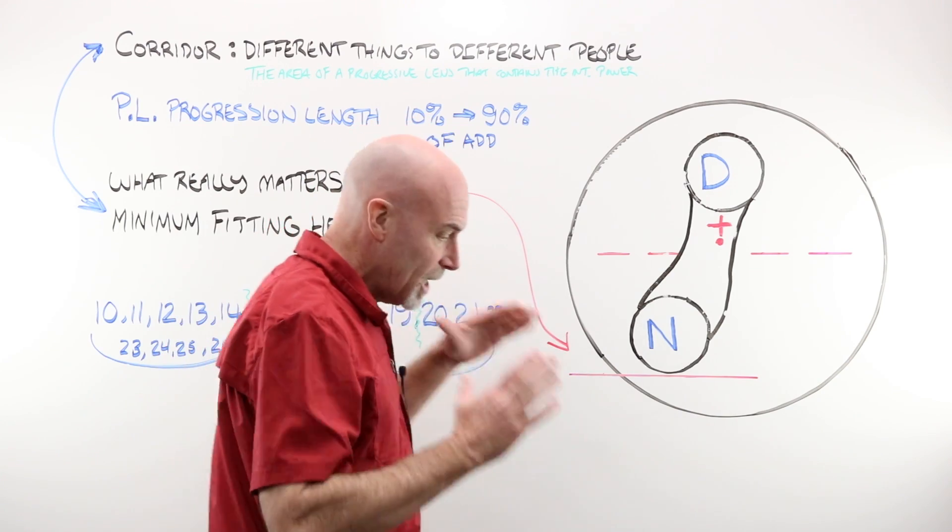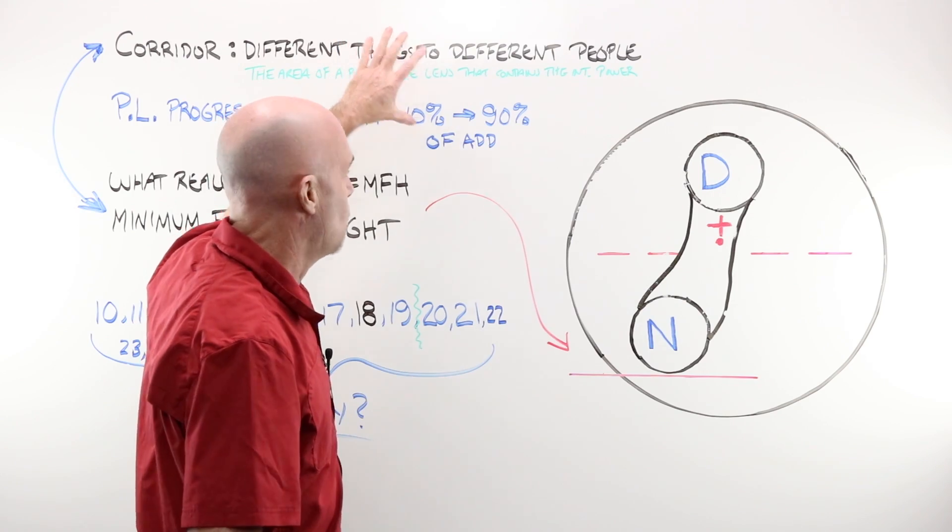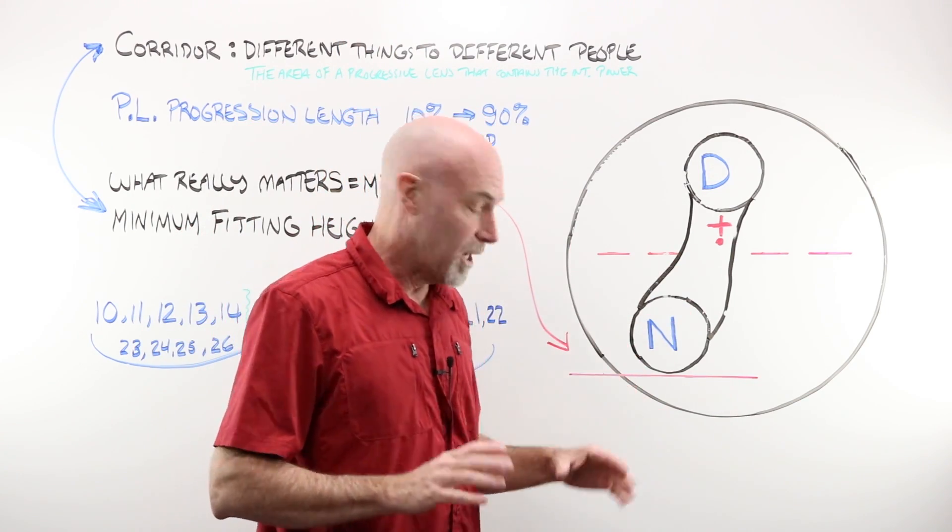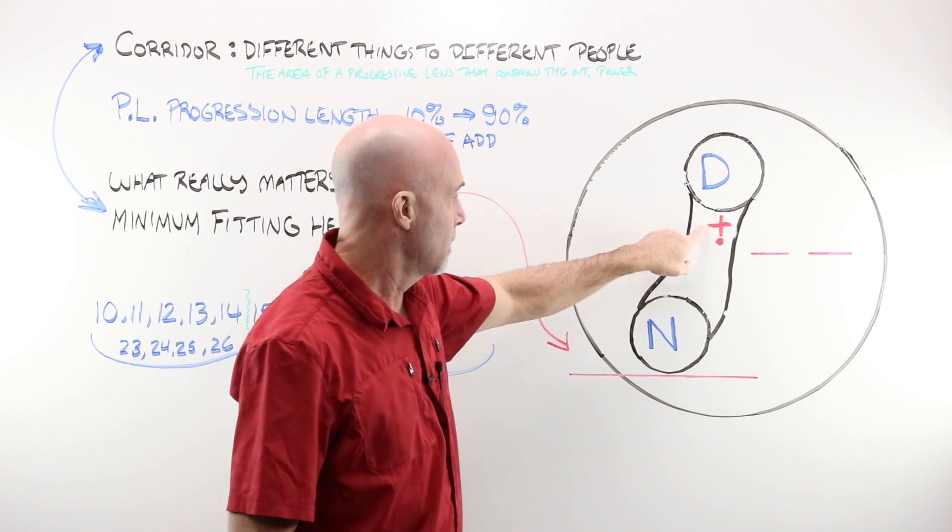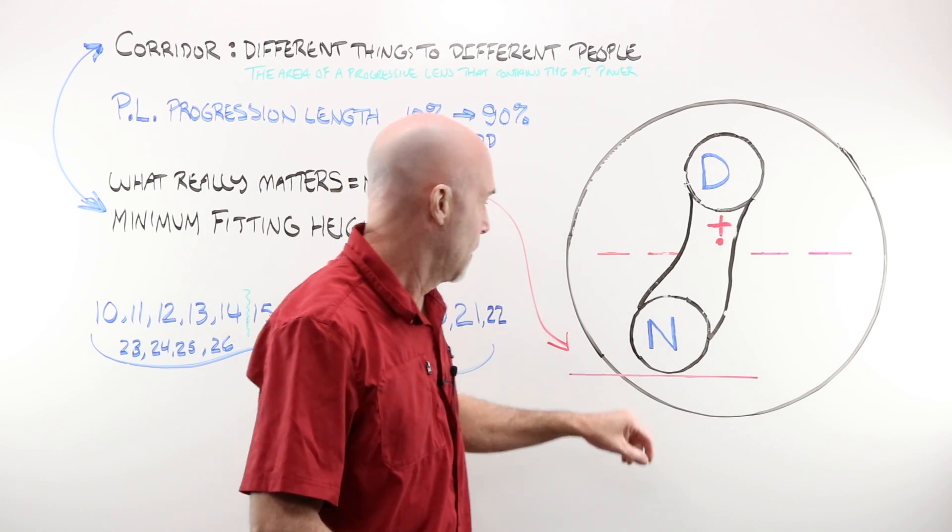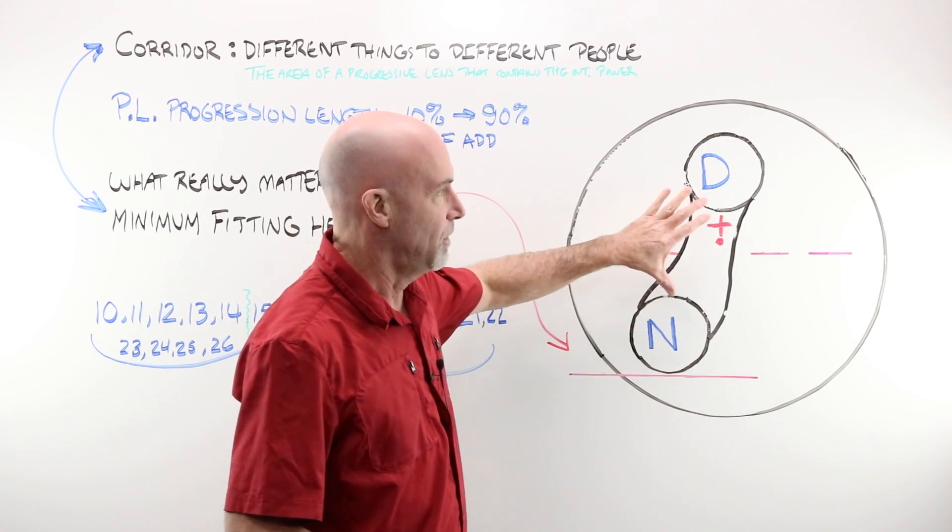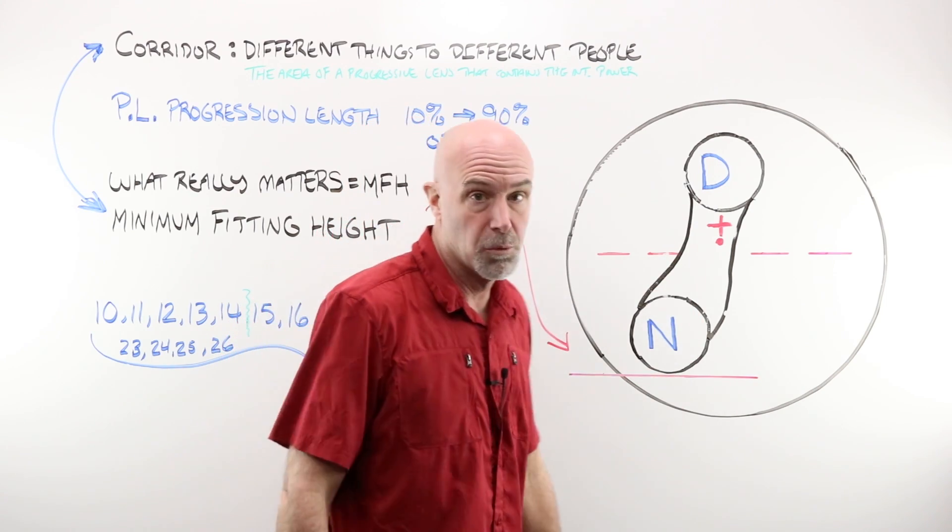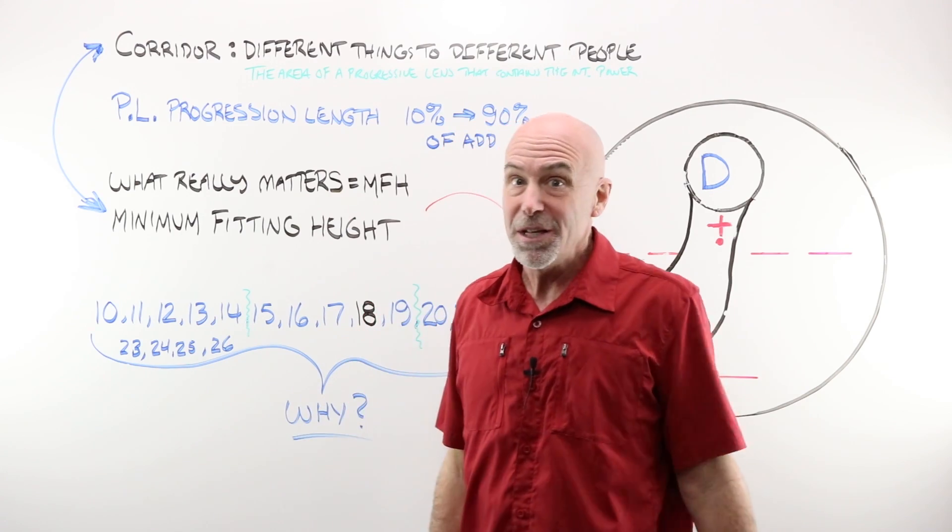So there is a relationship between minimum fitting height and what we want to call our corridor. That relationship is not fixed. I just said that this can move, it can change, it can shorten, lengthen, widen. It can start here, start there. That depends on the individual lens design. The only thing that's constant is that minimum fitting height. They're related, two different things, closely tied to each other, but that's the one we're concerned about. So I'm going to wipe the board clean, and let's talk some more about minimum fitting height.